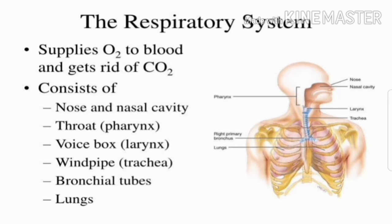The next one is the respiratory system. It supplies oxygen to the blood and gets rid of carbon dioxide. It consists of the nose and nasal cavity, throat, voice box, windpipe, bronchial tubes, and lungs. Whenever we breathe, we take oxygen in and release carbon dioxide — all done by the respiratory system.